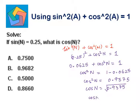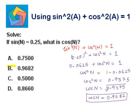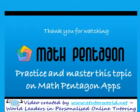We can say cos n is equal to the square root of 0.9375, or cos n is equal to 0.9682, taking positive square root both sides, which is the answer. I hope you can practice more problems on using sine squared n plus cos squared n is equal to 1 now. Thank you for watching. Have a great day. Bye-bye.